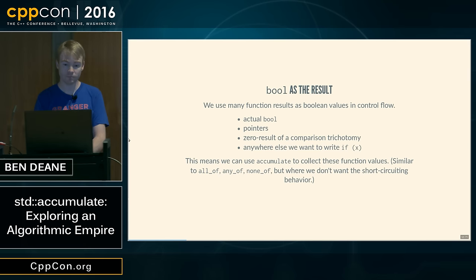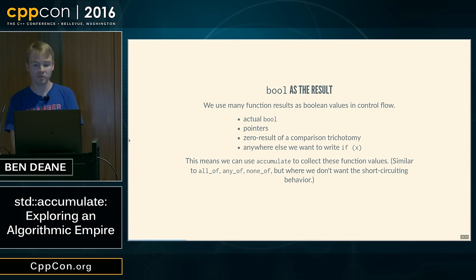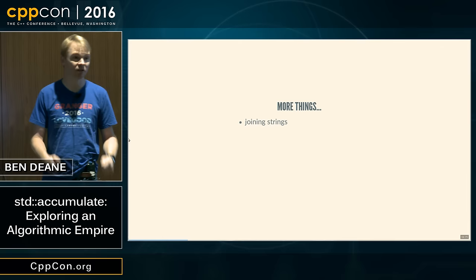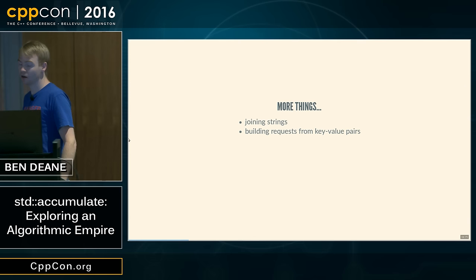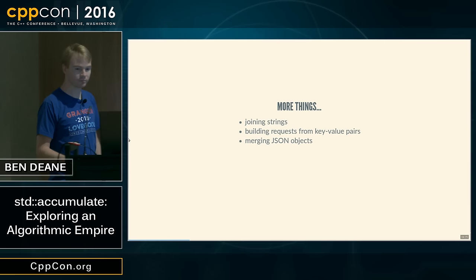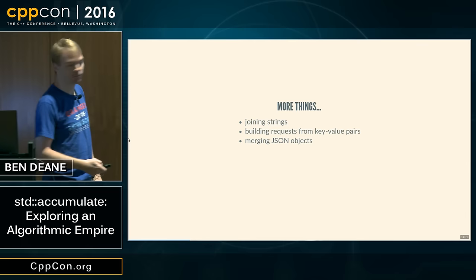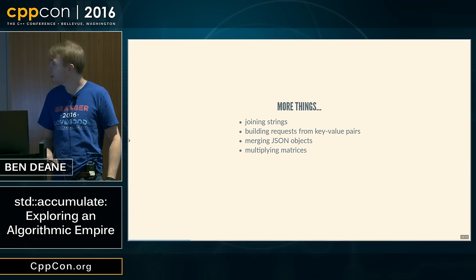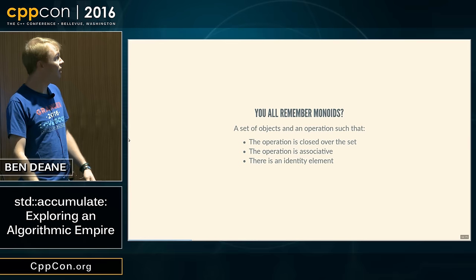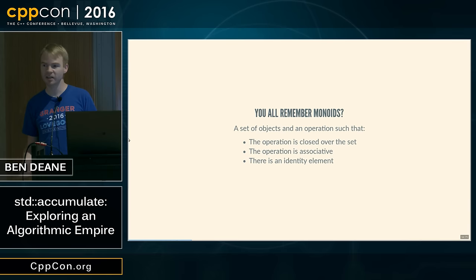There are a bunch more things we can accumulate, and all of these things have something in common. Joining strings — we can accumulate into one big string, very similar to building requests from key-value pairs like HTTP headers or arguments. Merging JSON objects, multiplying matrices — these are all things we can accumulate. What they have in common is that they're all monoids. A monoid is a set of objects and an operation such that the operation is closed over the set, it's associative, and there's an identity element. This is exactly what we need — in fact, a little bit stronger than what we need in some cases to accumulate things.